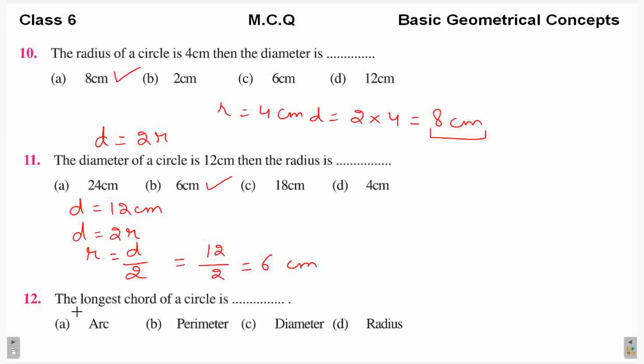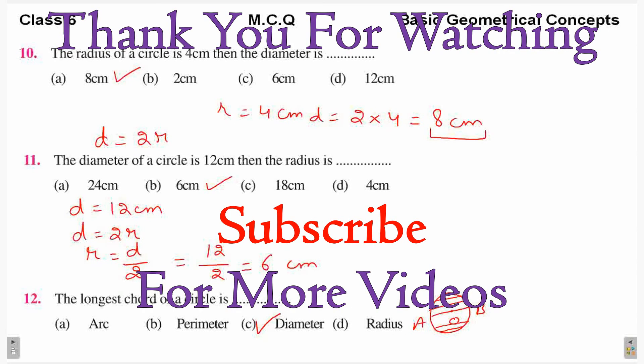Next, the longest chord of a circle is diameter. So this is a circle. Here I draw a chord by joining two points, and this chord also passes through center O. So this type of chord is known as diameter and this is the longest chord. Because if you draw any other chord on the circle, all the other chords will have length less than the diameter.